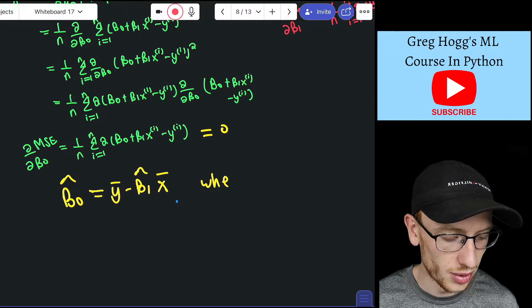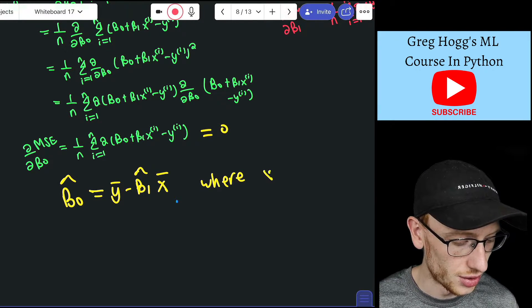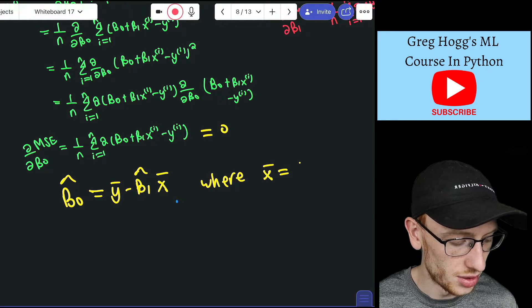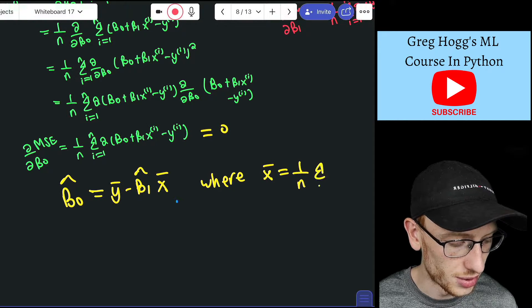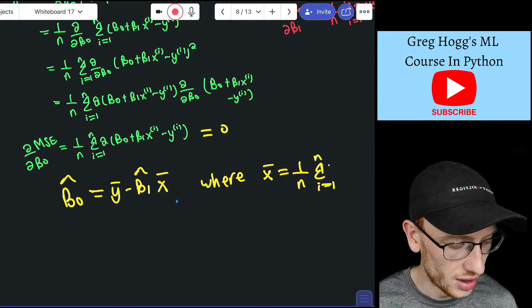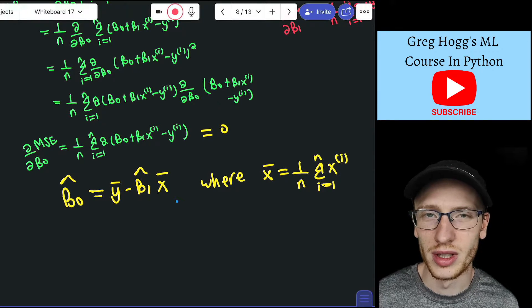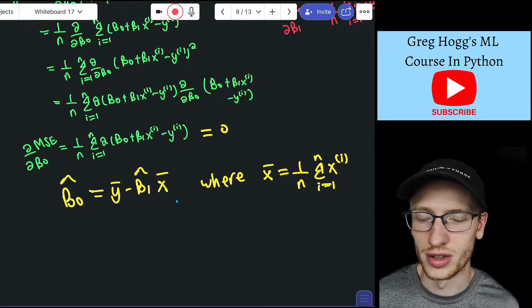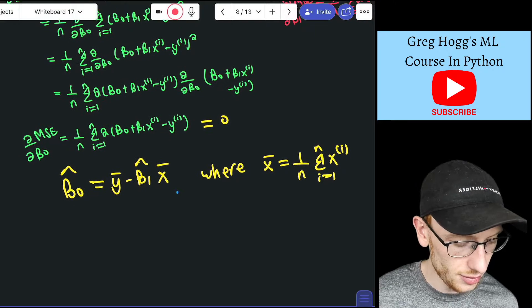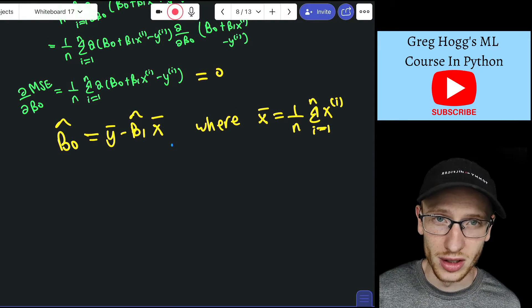Where the bar just means an average. So I'll just write it: x bar is equal to 1 over n times the sum as i goes from 1 to n of xi, and that would be the same for y bar, just with the y's instead. So that's what beta0 is equal to.